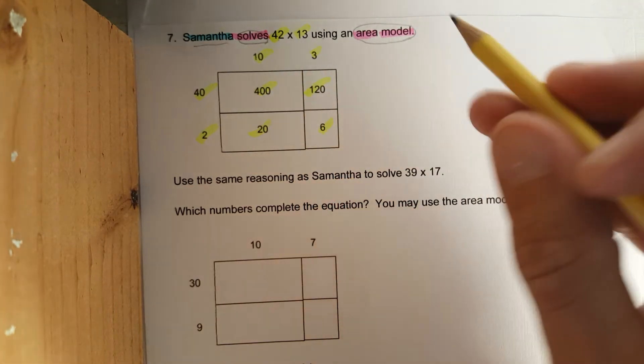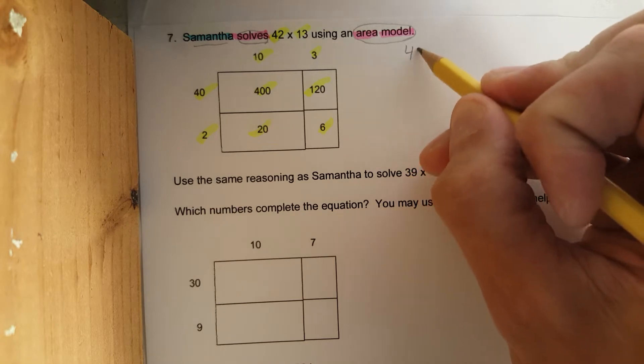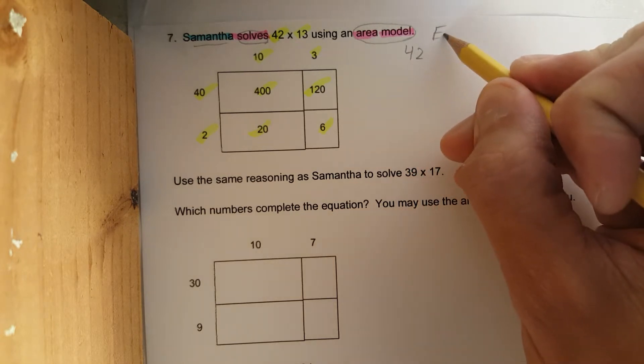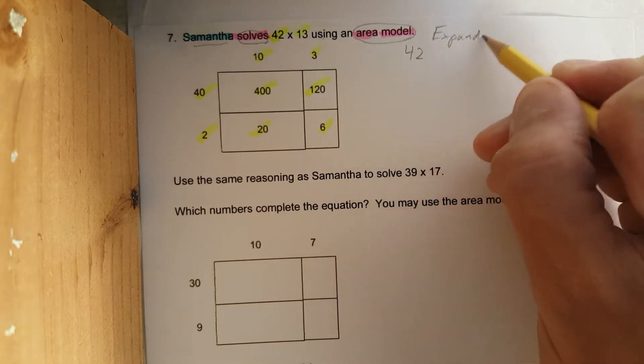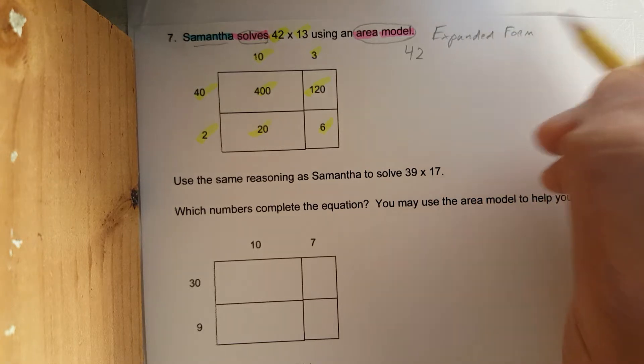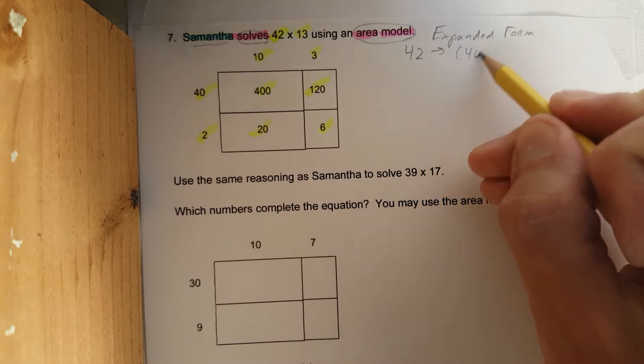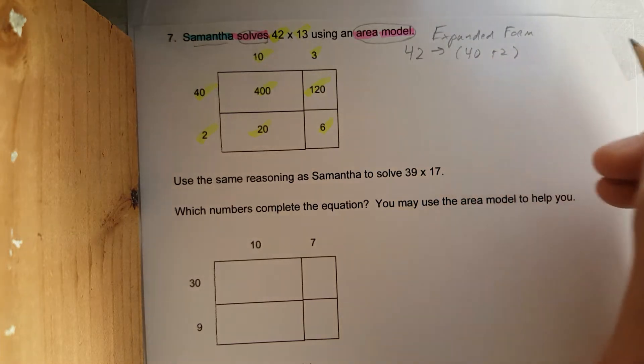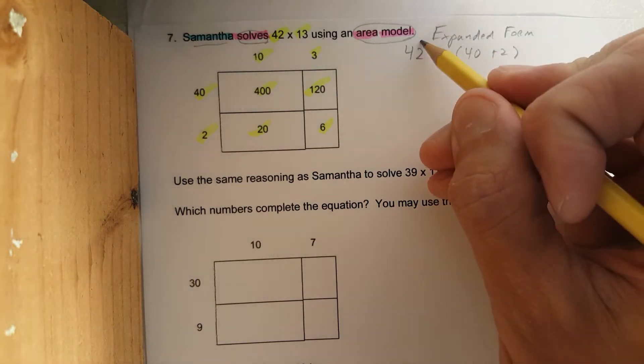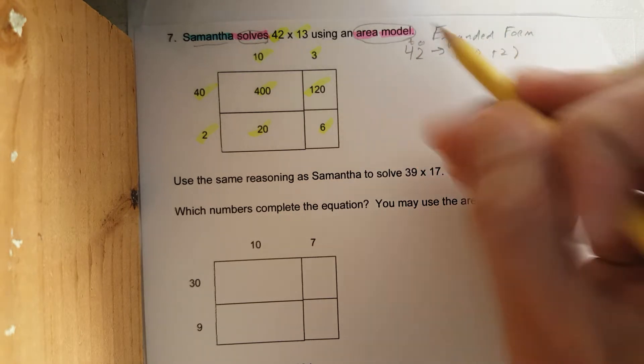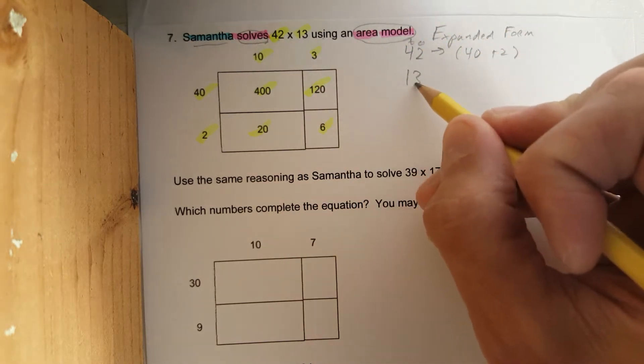What do I mean by that? Let's go and check expanded form. 42 can be written as 4 tens plus 2 ones. Remember, this is ones, tens. The other number is 13. 13 can be written as 10 plus 3.